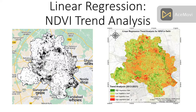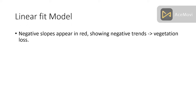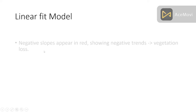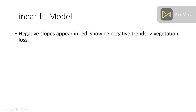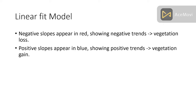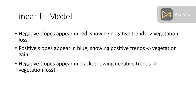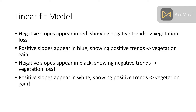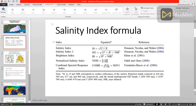The linear fit model shows negative slopes representing the negative trend or vegetation loss. In the grayscale color, negative slope appears as black. Negative trend means vegetation will be lost, and positive slope appears in another color showing the positive trend — positive means vegetation gain. So negative trend equals vegetation loss, positive trend equals vegetation gain. When we get the negative slope in black, it is showing the negative trend, and the positive slope appears in white color showing the vegetation gain.